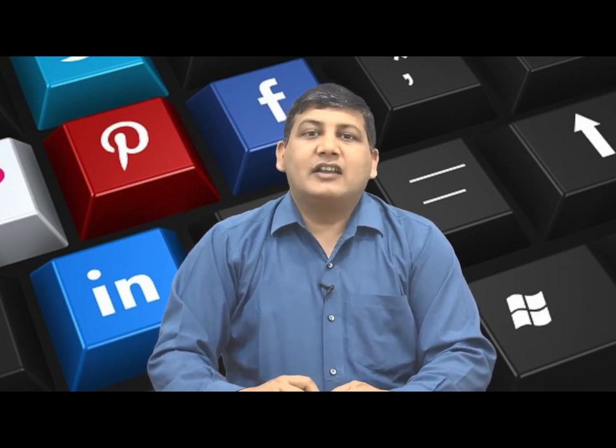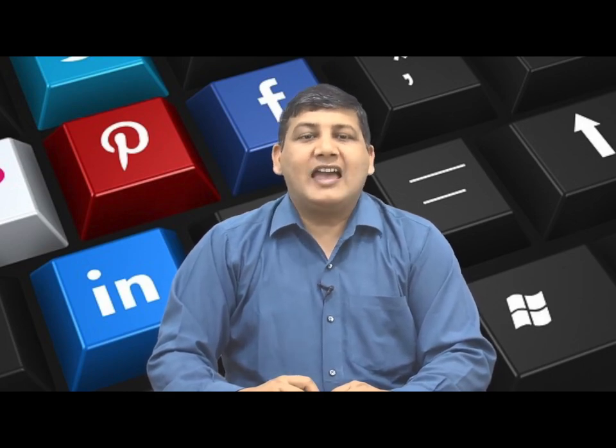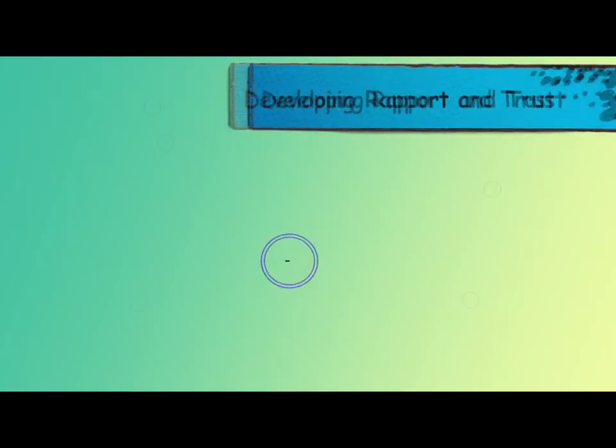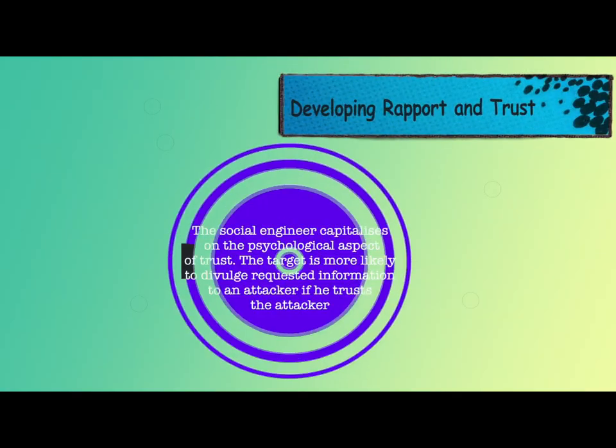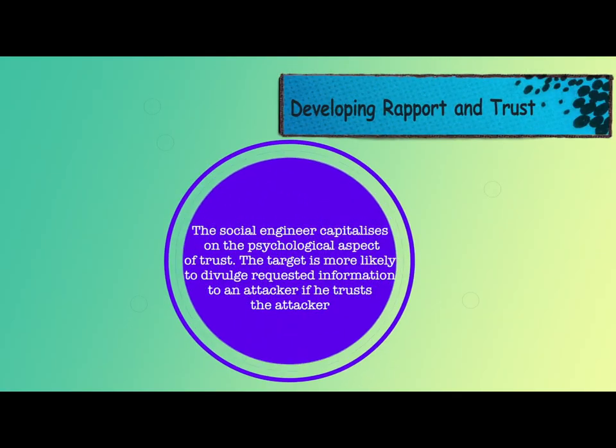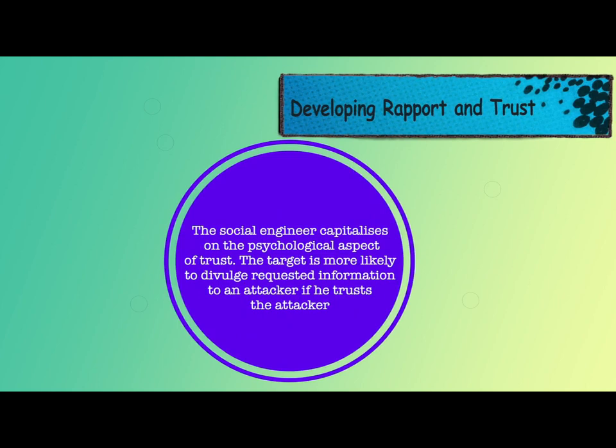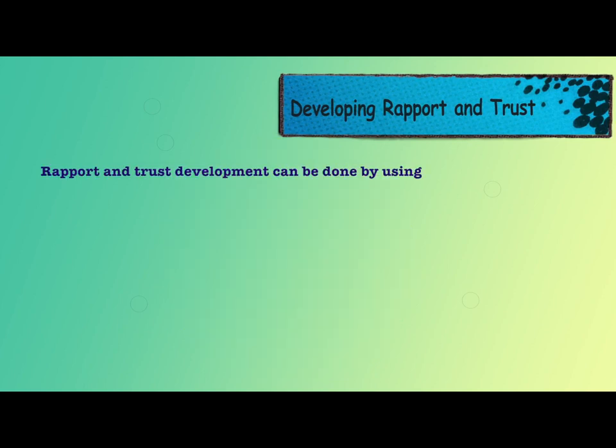The second step of the social engineering attack cycle is developing rapport and trust. The social engineer capitalizes on the psychological aspect of trust — the target is more likely to divulge requested information to an attacker if they trust the attacker.